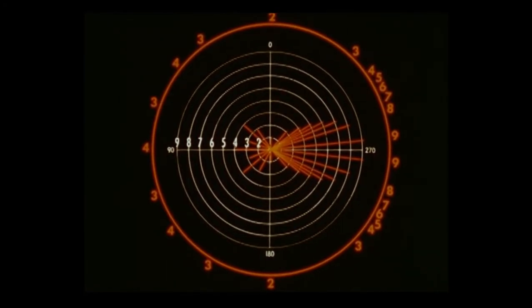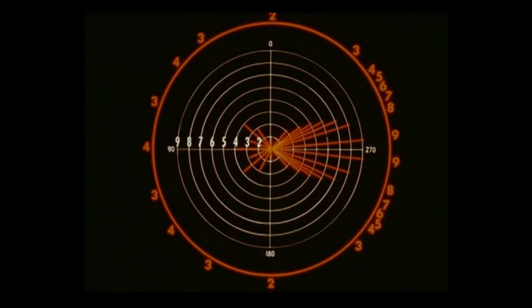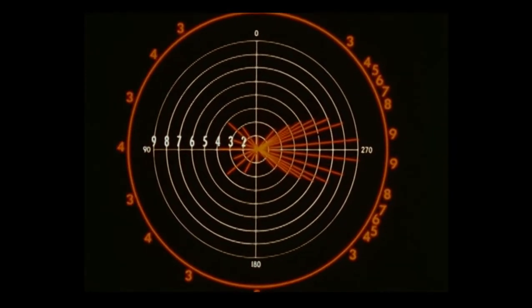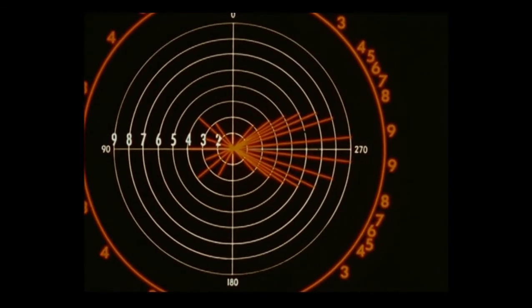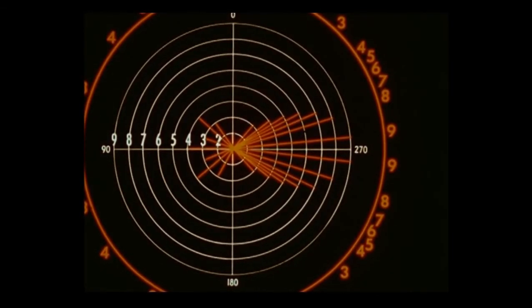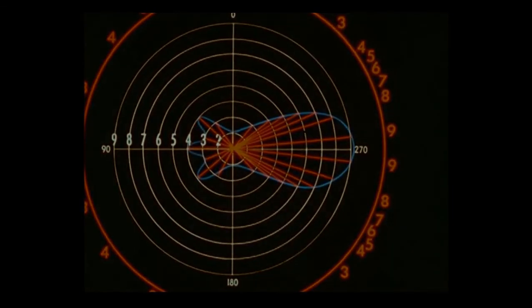These vectors represent the strength and direction of the field. Joining the tips of the vectors, we obtain the antenna's polar diagram. The complete polar diagram is three-dimensional, and it enables us to visualize an antenna's radiating characteristics.